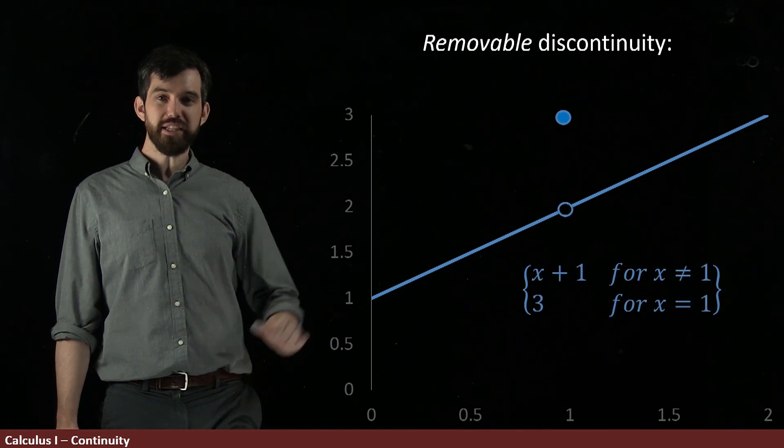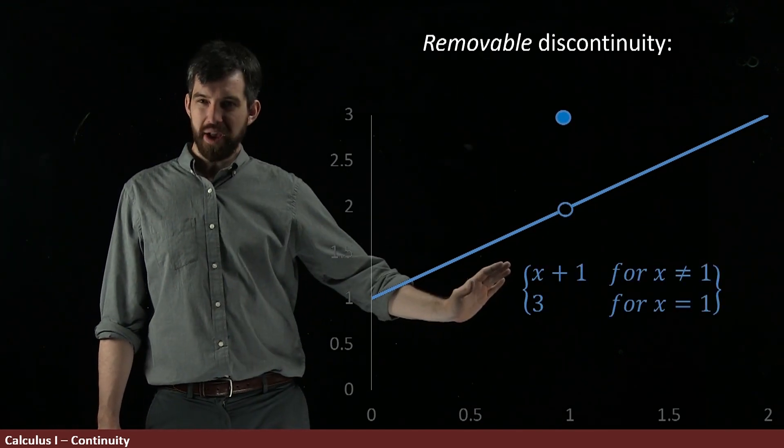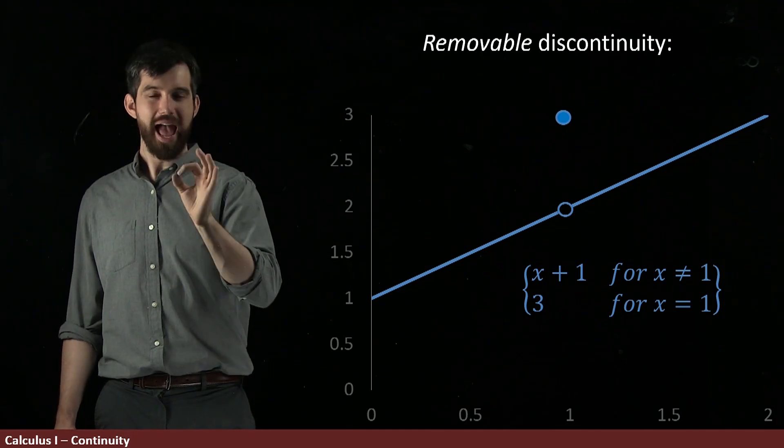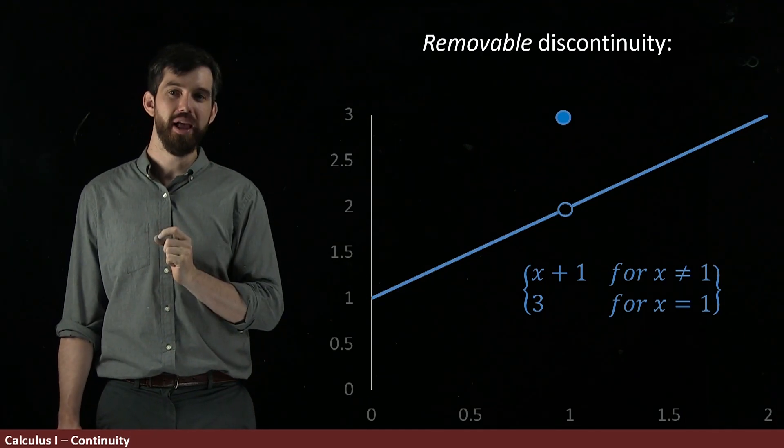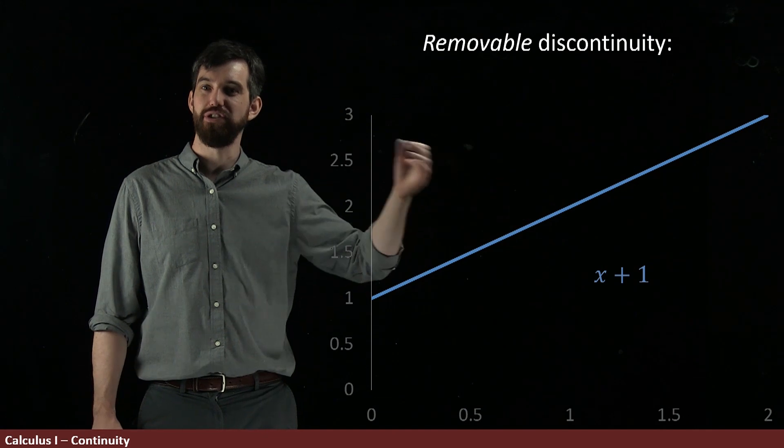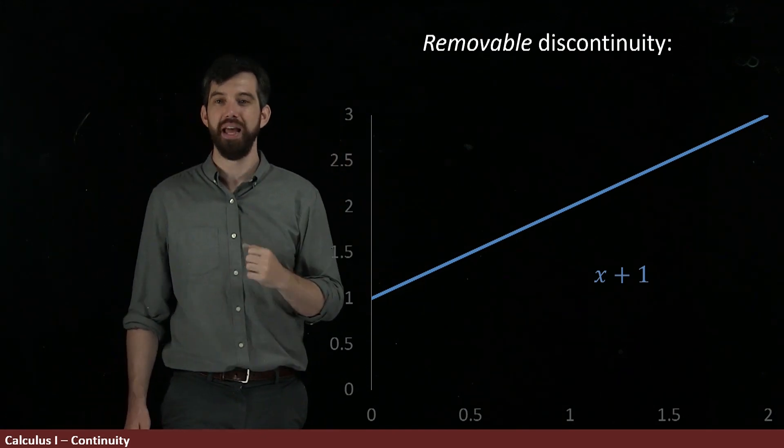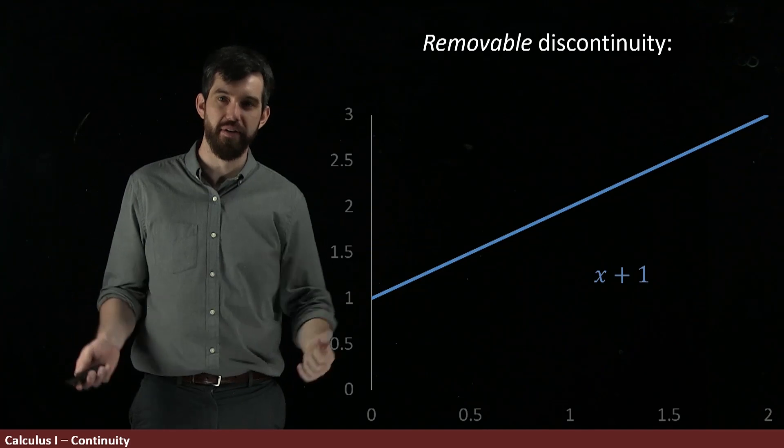So in other words, this original function, the piecewise defined one, with just this one small change, adding one point in from before, is now going to be turned to a continuous function. So we see that that example is a removable discontinuity because it's easy to get rid of it.